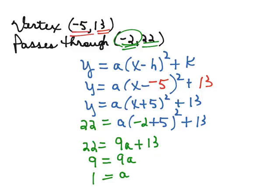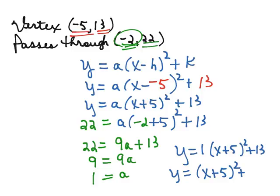So our equation for this parabola is y equals 1 times (x plus 5) squared plus 13. And we typically don't write that 1, so we're going to say y equals (x plus 5) squared plus 13.